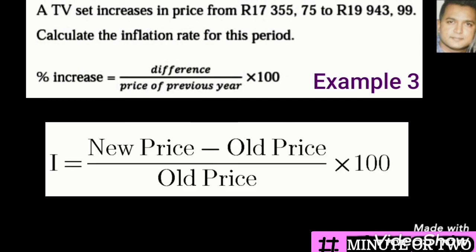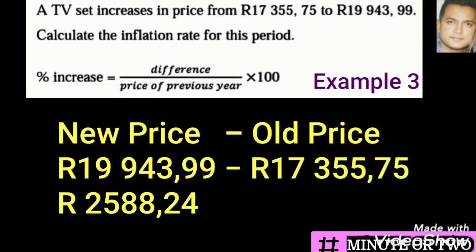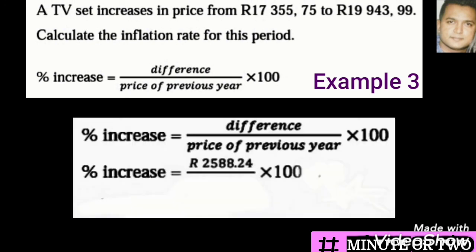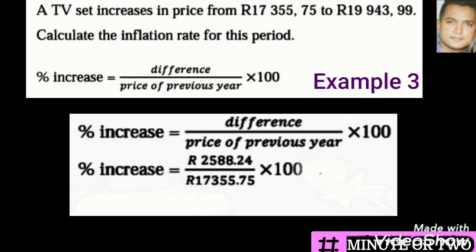Most of you would be familiar with the bottom formula. In the top formula, the word 'difference' is the same as new price minus old price, and 'price of the previous year' is the same as old price. To get the difference, we take the new price minus the old price: R19,943.99 minus R17,355.75, which gives us a balance of R2,588.24.